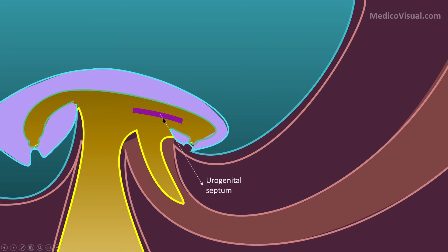A urogenital septum will arise and divide this incorporated part of the yolk sac into two parts: one part forming the hindgut, and the other — the urogenital sinus — contributing towards the formation of the urinary bladder. The remaining distal part of the allantois has entered into the umbilical cord, and this is called the urachus. This is the part of allantois that contributes towards the formation of the urinary bladder.